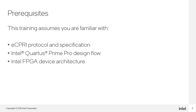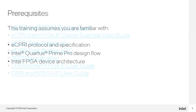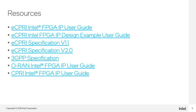This training assumes that you have a good understanding of the eCPRI protocol, as we will not spend much time defining its details. The course also assumes you're familiar with the Intel Quartus Prime Pro software tool suite and its design flow when targeting FPGAs. A good understanding of Intel FPGA architecture is also helpful. If you have further questions on the Intel 5G IP or the 3GPP or eCPRI specs, here are links to some resources.